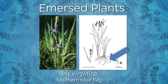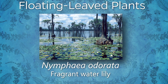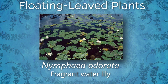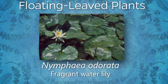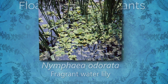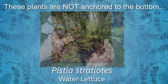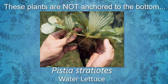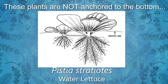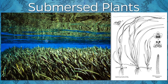Immersed plants have roots underwater, with part of the plant rising above water. Floating-leaved plants have leaves that float on the surface. Leaves are not always anchored to the bottom. Submersed plants grow with their roots, stems, and leaves completely underwater.